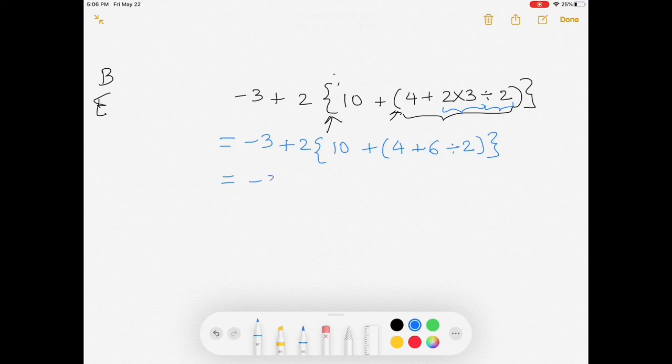Again, moving forward, doing the same thing because now that multiplication is done within the small bracket, the division needs to be done, which is 6 divided by 2 is 3. And then we close the bracket. Then moving on once more, what is left inside the small bracket is just the addition. So we're going to work on that: 4 plus 3 is 7.